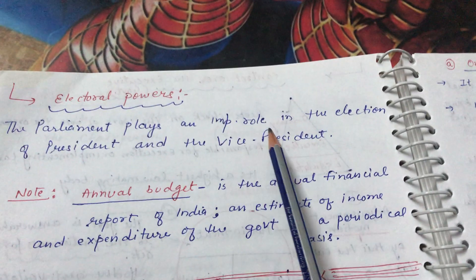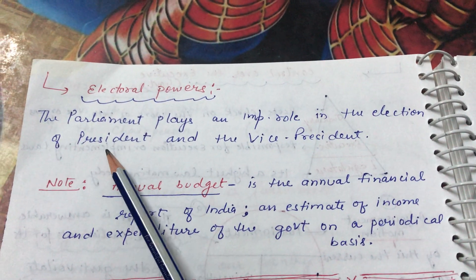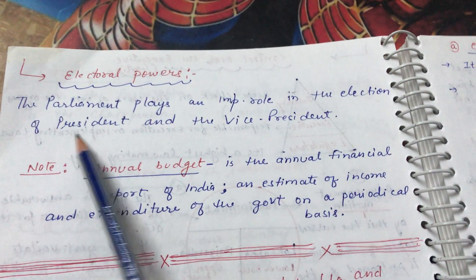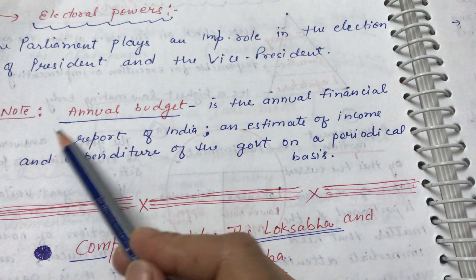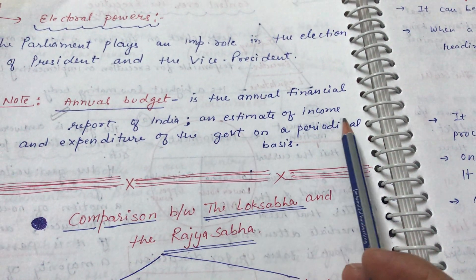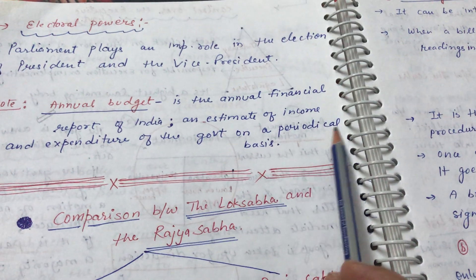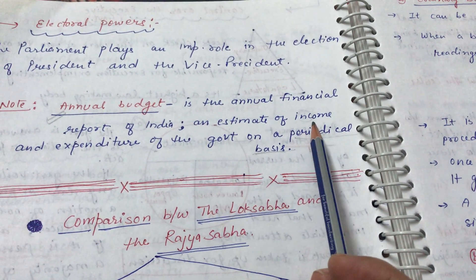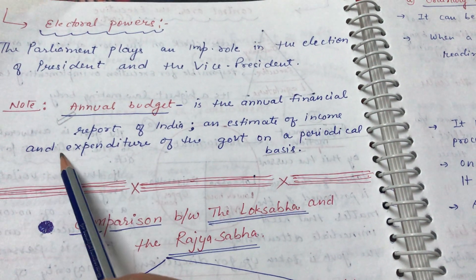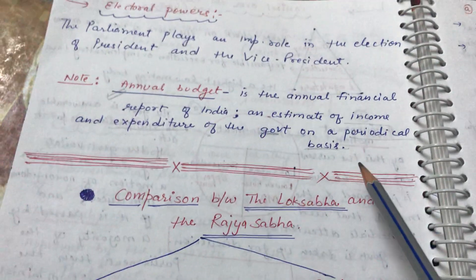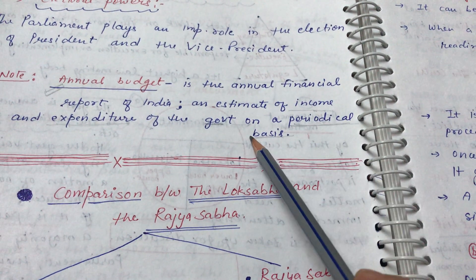Parliament also plays an important role in the elections of the President and Vice President. The annual budget is the annual financial report of India — an estimate of income and expenditure of the government on a periodic basis. The government keeps check on how much income is coming into the country and how much is being spent, reviewed every year or every six months.